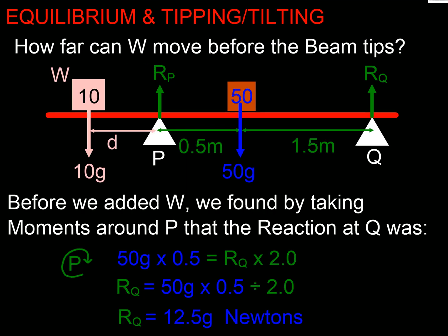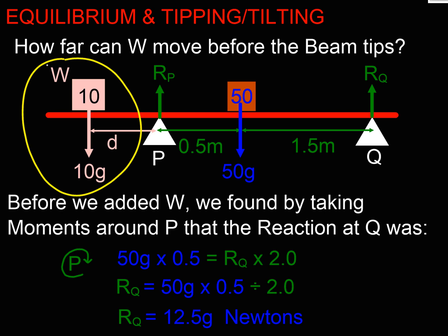So what happens if I add another weight outside of P and Q? It's not between, it's outside. If I just put it here initially, it would have no effect because it would be over one of the pivot points. But as I start to move it to the left, at some point it's going to tip over. And the question is, at what point is that going to happen?